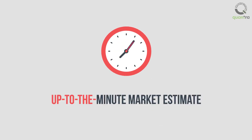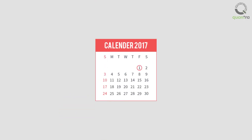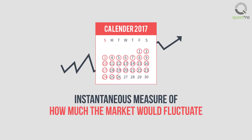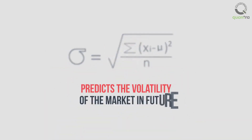VIX is an up-to-the-minute market estimate for implied volatility of the S&P 500 index. It is calculated by taking the midpoints of the bid-ask quotes — that is, the price of options — of the real-time S&P 500 index options. For each tick, VIX provides an instantaneous measure of how much the market would fluctuate in the next 30 days.